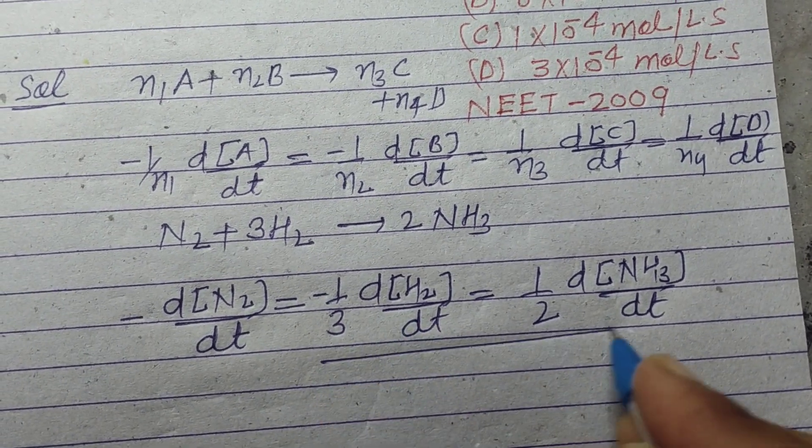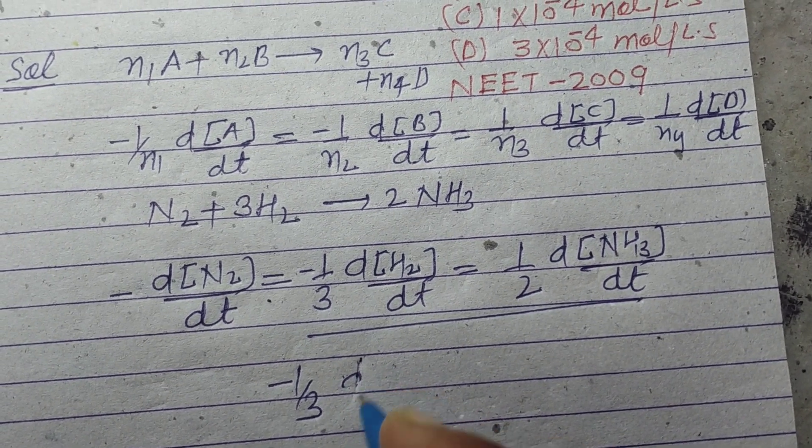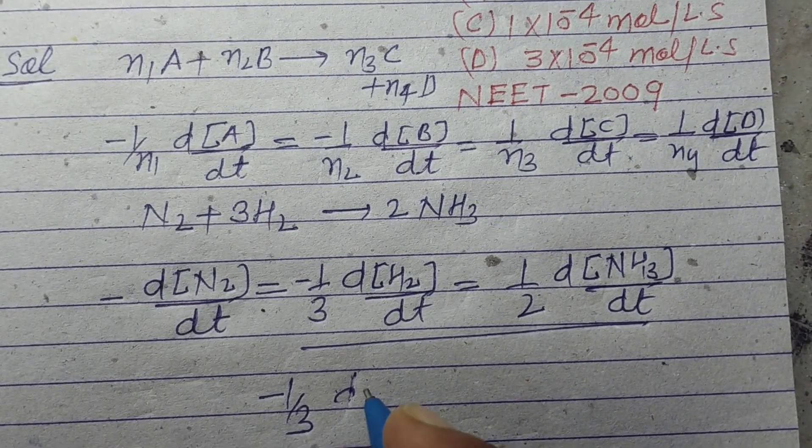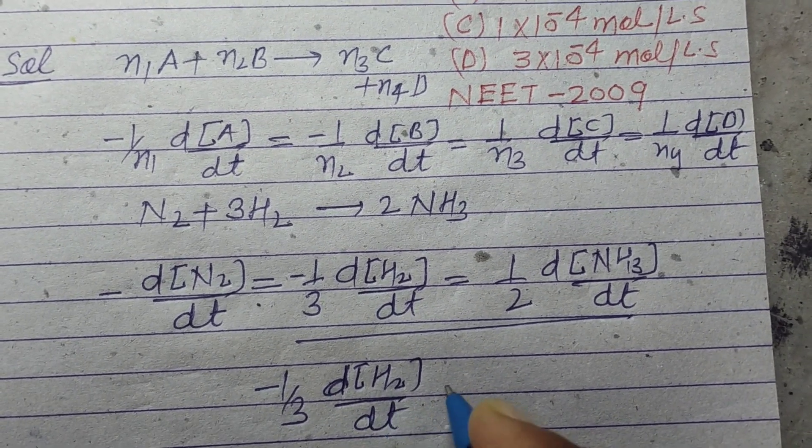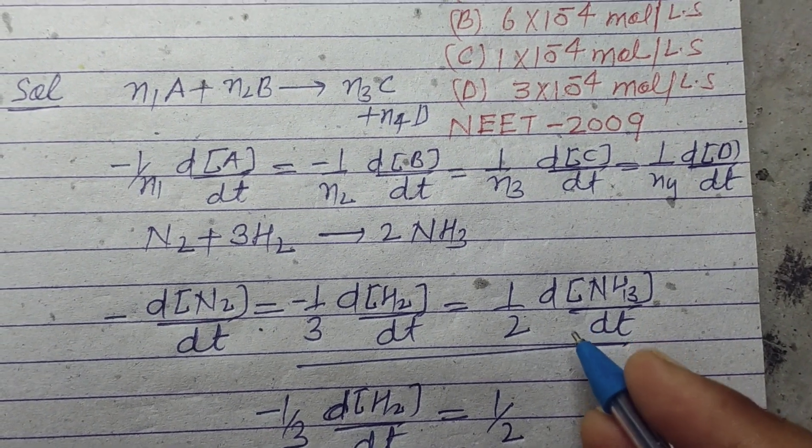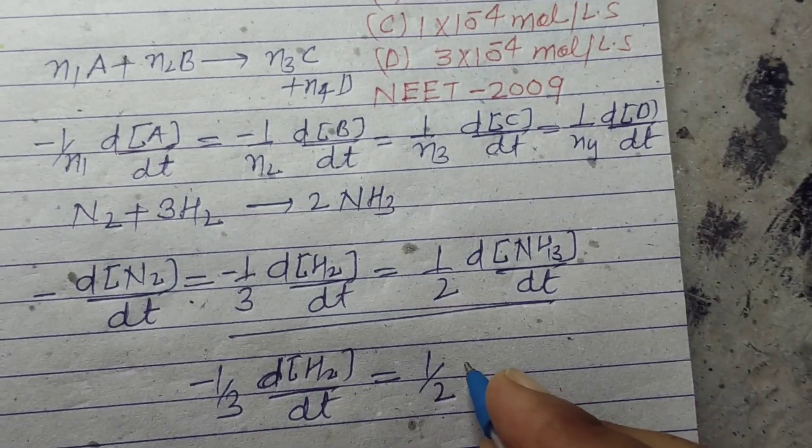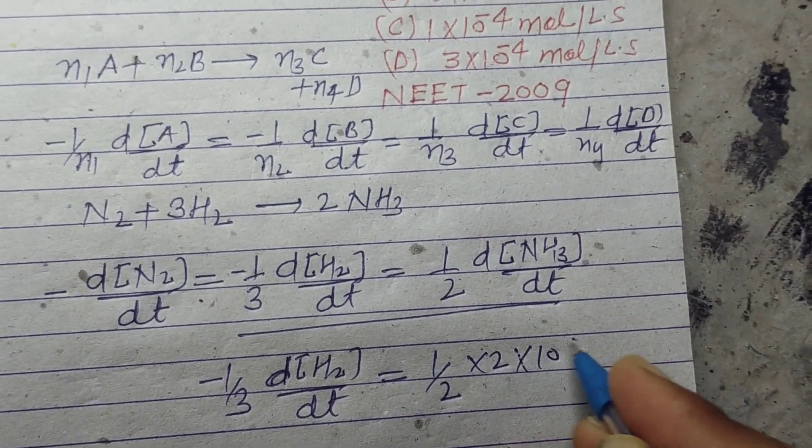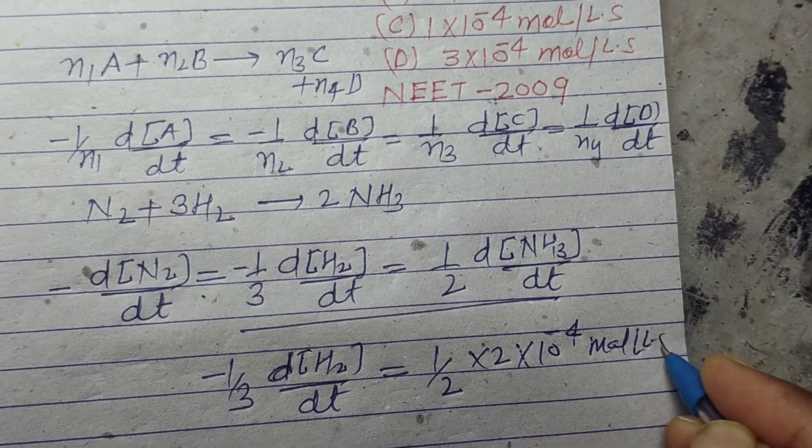Here we want to find out -1/3 d[H2]/dt, and this is given to us which is 2×10^-4 mole per liter per second.